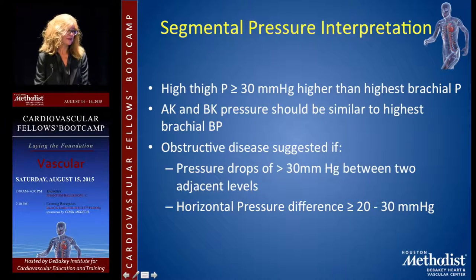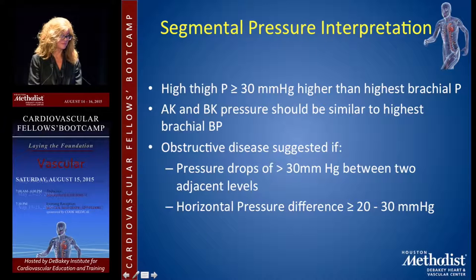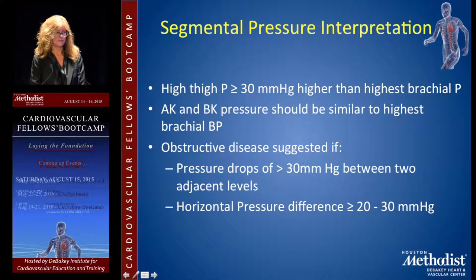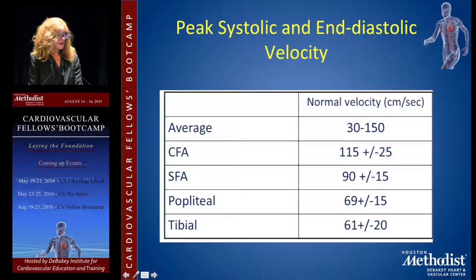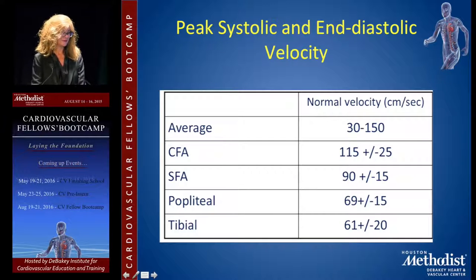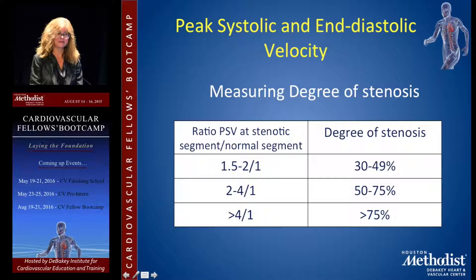Bilateral low high-thigh pressure indicates aortic disease; unilateral findings suggest iliac disease. Above-knee and below-knee pressures should be similar to the highest arm blood pressure. A drop of 30 mmHg between levels is indicative of disease. From peak systolic and end-diastolic velocities, a velocity ratio greater than 4 between one level and another implies significant narrowing with stenosis greater than 75%.